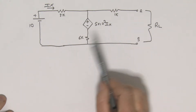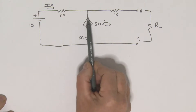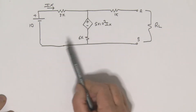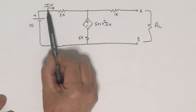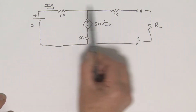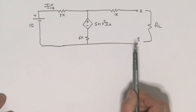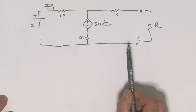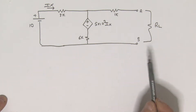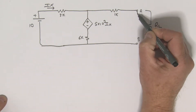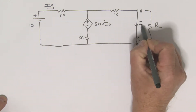This circuit has an independent source of 10 volts and a dependent source — a current-dependent voltage source whose value depends on Ix. In order to find the Thevenin equivalent circuit as far as terminals A and B are concerned, we need to find the short-circuit current and the open-circuit voltage. First, we'll find the short-circuit current by placing a short between terminals A and B and calculating I short-circuit.